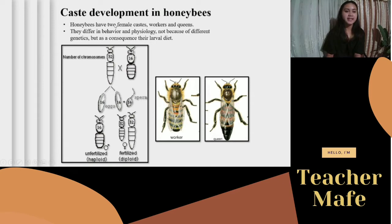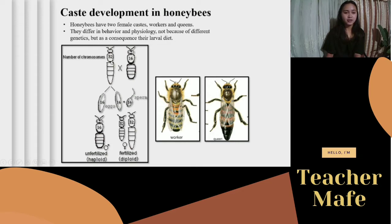Honeybees have two female castes: workers and queens. As you can observe, they differ in their physiology and in their behavior — not because of different genetics, but as a consequence of their larval diet. Queen bees have 32 chromosomes, while male honeybees have 16 chromosomes.